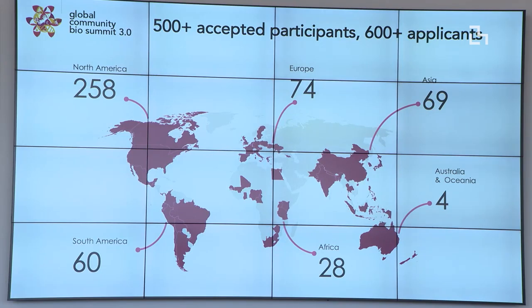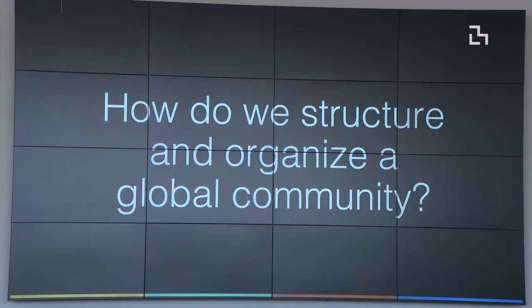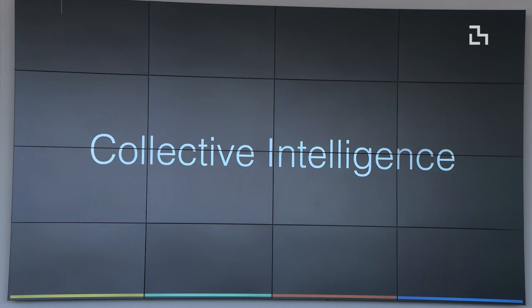One of the things about the bio summit that is so powerful is that we really make it an experiential event. We had more than 170 participant-led talks, breakout sessions, and workshops. This is a whole field that's about co-creation and participation — everybody getting involved in science and synthetic biology. As we've been doing this work, there's a key research and scholarship aspect: how do we ultimately structure these global communities? I've been getting into the idea of collective intelligence — how do we create a global community that can do synthetic biology, biodesign, and bio art in a more powerful way?